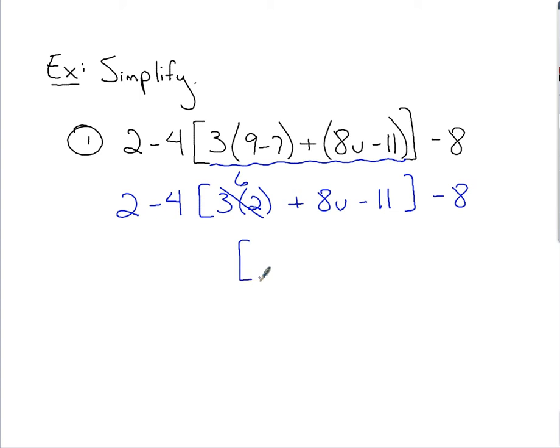If I combine that with the minus 11 inside the brackets, well, let's see. Now I've got the 6 minus the 11, so that's negative 5. Plus the 8u. Or I'd have 8u minus 5. However you want to write it there. Bring down the minus 8. Bring down the 2 minus the 4.